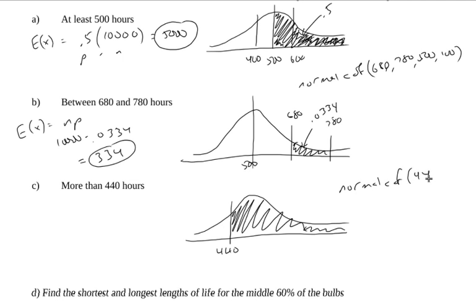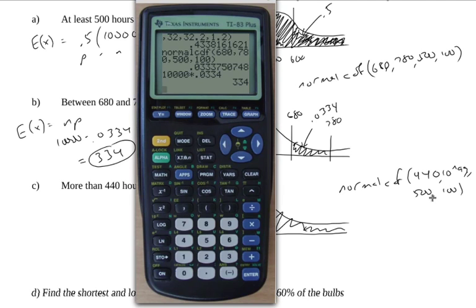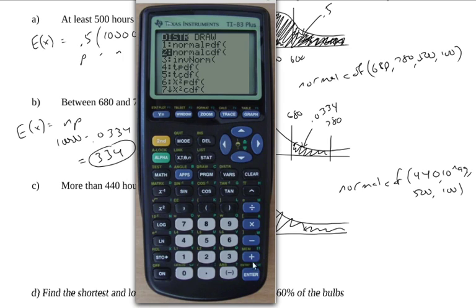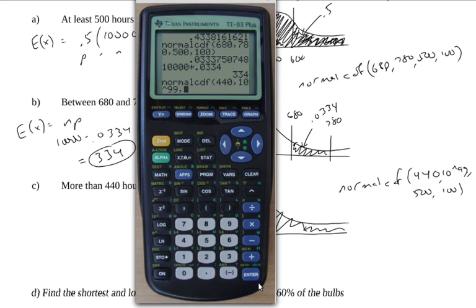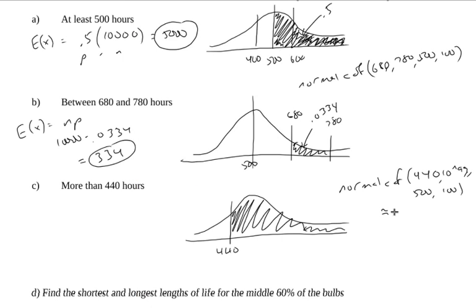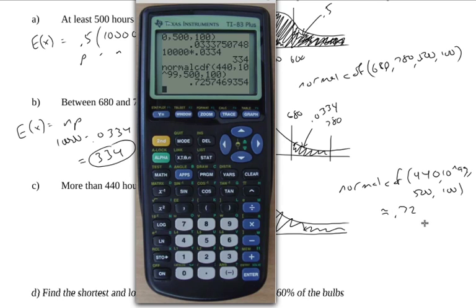The lower bound is 440, because that's the lower bound of my area that's shaded here. My upper bound is 10 to the 99th. My mean is 500, and my standard deviation is 100. Yeah, whatever, I'll just type it in.